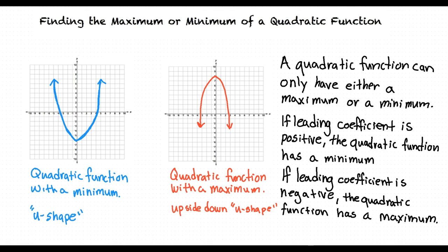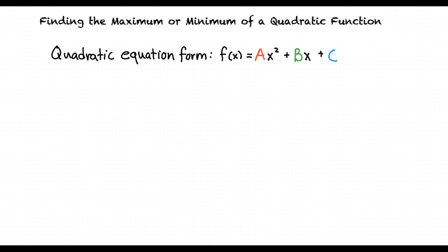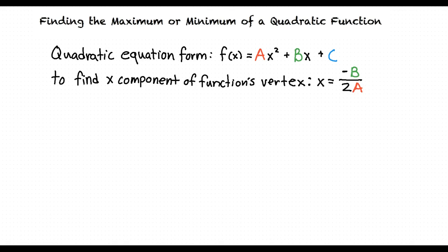Once we find out if a quadratic function has either a maximum or a minimum, how do we find out exactly where that point is located? A quadratic equation takes the form ax squared plus bx plus c, where a is the leading coefficient of the function, b is the coefficient in front of x, and c is the y-intercept. Once that is understood, we can use the equation x equals negative b over 2a to find the x component of our function's vertex. Once we find the x component of the vertex, we will be able to plug it into our function to find the y component.